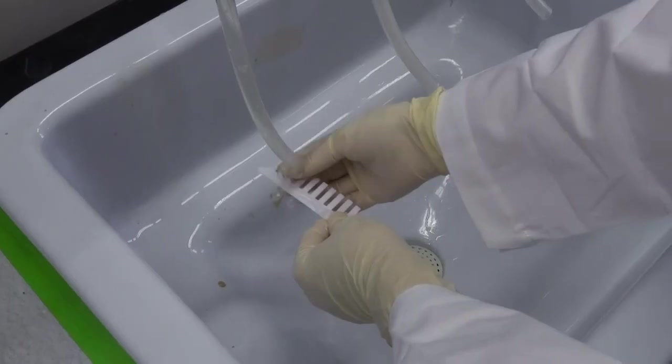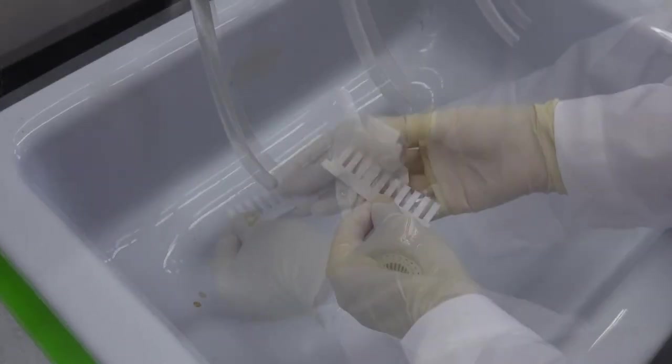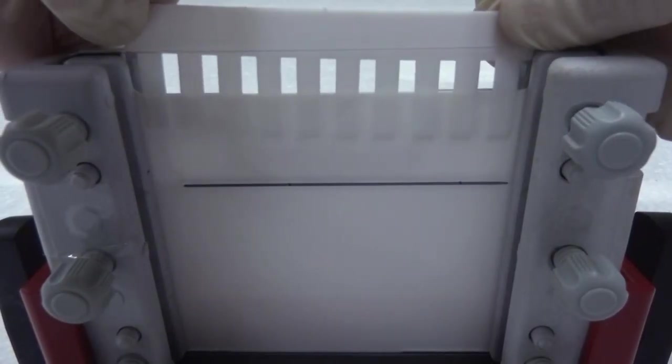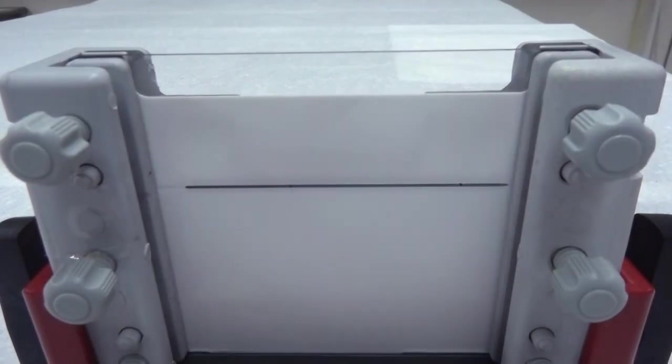After the lower gel polymerizes successfully, preparation of the upper gel may start. Wash and dry the comb, make it flat, and insert it between the plates for testing. If everything is good, pull the comb out for later use.